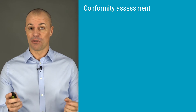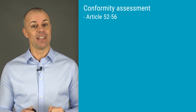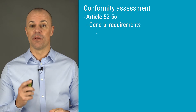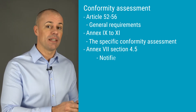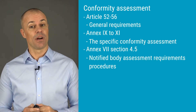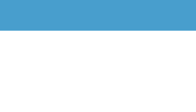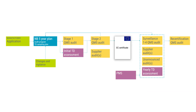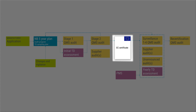The MDR requirements for notified body conformity assessments are a bit spread out in the MDR. The basis is found in Article 52, with references to the three different conformity assessment procedure annexes: 9, 10, and 11. How the conformity assessment is actually done is best described in the notified body annex, Annex 7, under section 4.5. The normal conformity assessment cycle is 5 years and such a cycle can be illustrated like this.